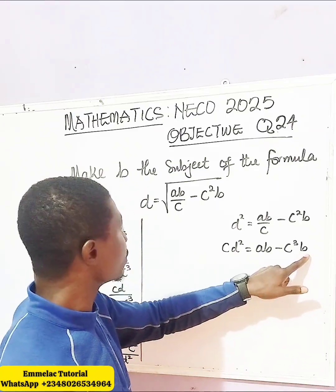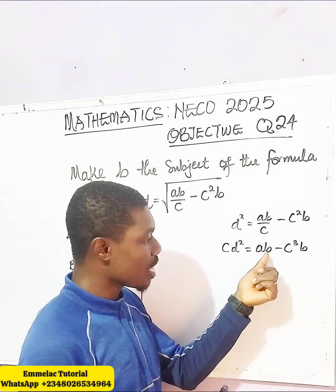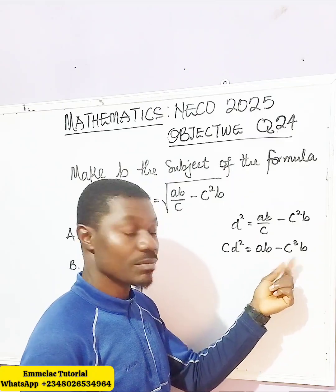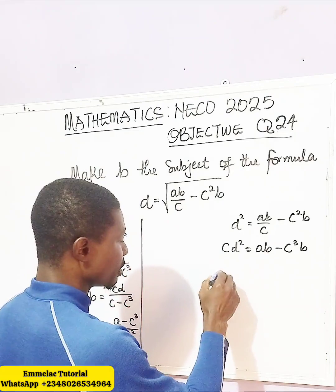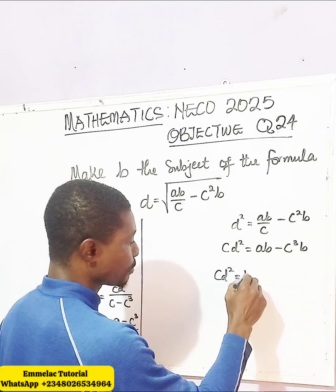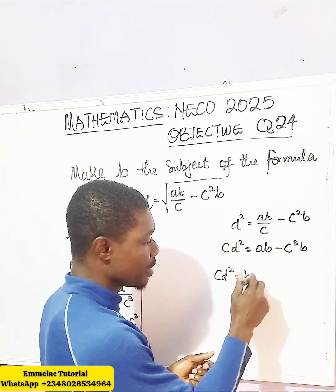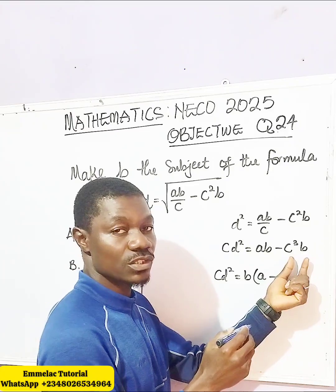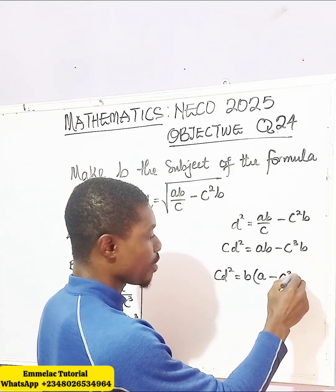Take note — we are actually trying to make B the subject of the formula. We can see that B appears two times here, so let us factor out B. We have CD squared equals B factored out, giving us B times (A minus C cubed).